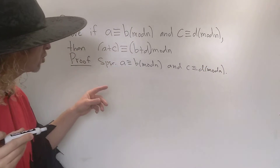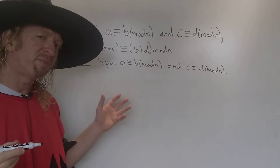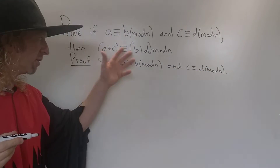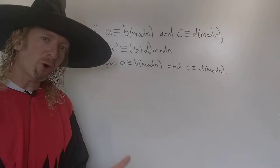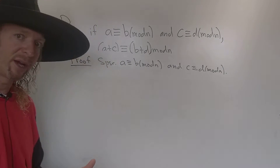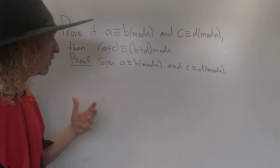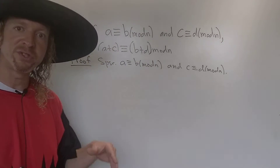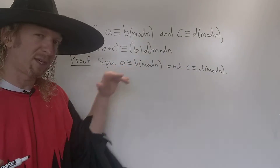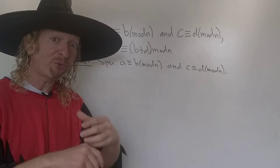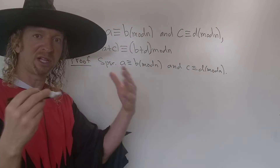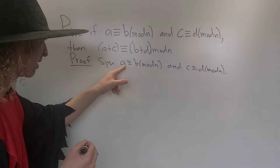Now we have to show that A plus C is congruent to B plus D modulo N. Typically what you do in proofs is write down what each of these things mean, and then from there hopefully some clarity occurs.